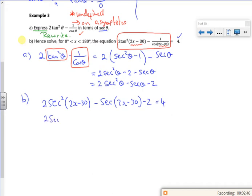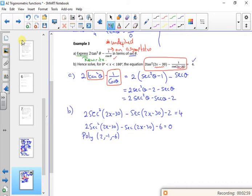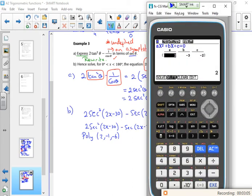So I've got 2sec²(2x - 30) - sec(2x - 30) - 6 = 0. And if I put that into poly, so I'm just going to put 2, -1, -6 into poly. Just press escape on the keyboard. Find. Bring the calculator up. Press the right one.